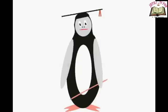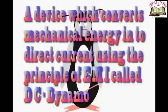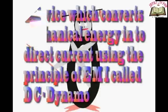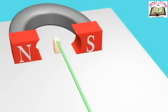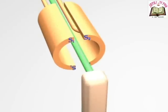DC dynamo: A device which converts mechanical energy into direct current using the principle of electromagnetic induction is called a DC dynamo or direct current dynamo. Construction: The construction of a DC dynamo is similar to that of an AC dynamo, but instead of full rings in AC dynamo, two halves S1 and S2 of the copper ring are used in DC dynamo. These are called split rings.